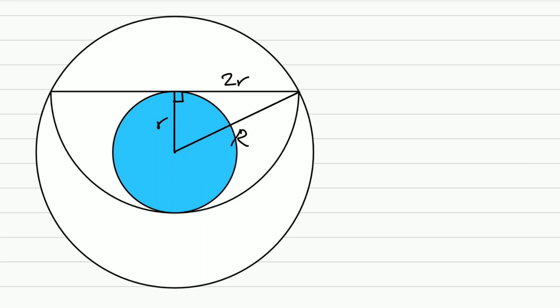Now, Pythagoras. Capital R squared is equal to small r squared plus 2 times R quantity squared. And that is 1 plus 4, 5 times R squared.